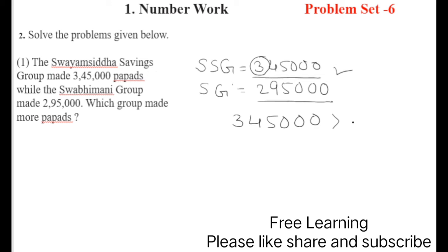So we can write: three lakh forty-five thousand is bigger than two lakh ninety-five thousand. Then write one sentence: Swam Siddha Group made more papads. You have to write down this sentence.